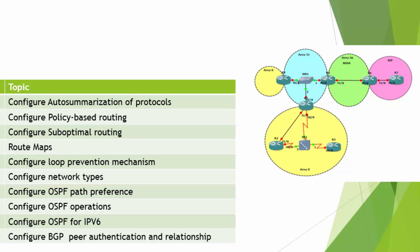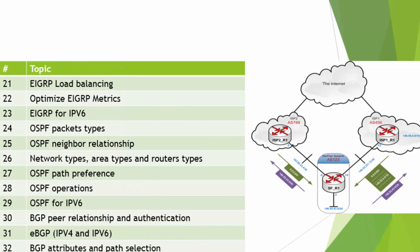What is PBR — Policy-Based Routing? What is suboptimal routing? What are route maps and how do they work? We're going to configure loop prevention mechanisms. We're going to configure the network types and talk about them a little bit later. We're going to see OSPF path preference, OSPF path operation, and OSPF for IPv6. We're going to configure BGP peer authentication and relationships, which is a topic that also ties into security. That's the second part of Layer 3. The third part is going to be the famous EIGRP, including EIGRP load balancing.